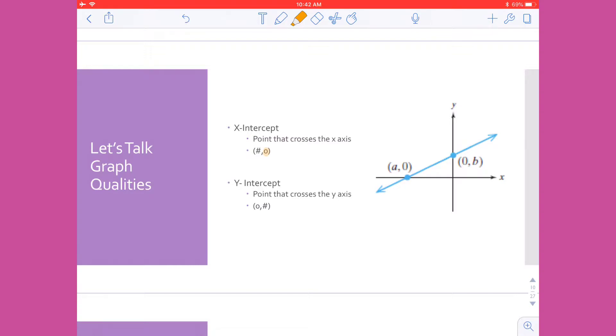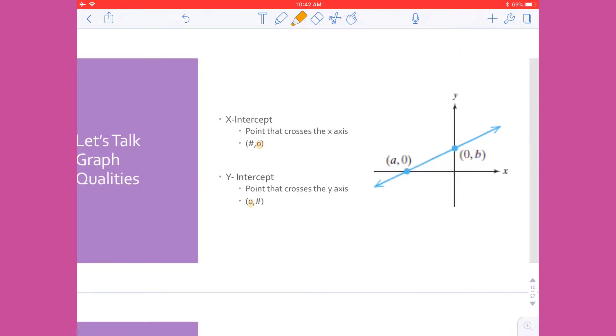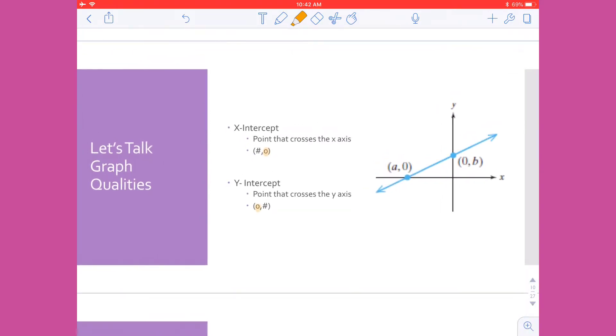Likewise, with a y-intercept, it is a point that crosses the y-axis. So in this case, we know that the coordinates are always zero and a number. So we have to figure out what the value of y is, but we always know that our x value is zero. So if we're asked to find the y-intercept, we can plug in zero for x and solve.